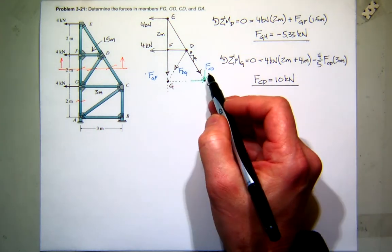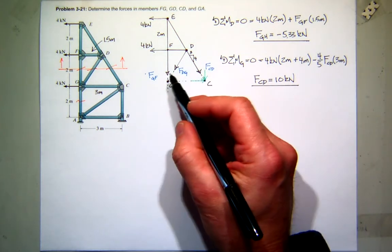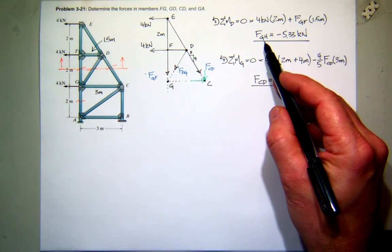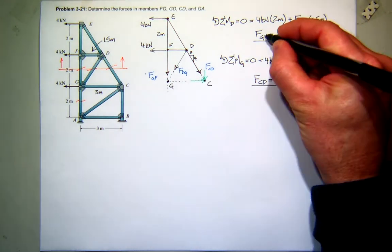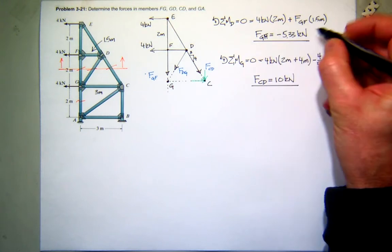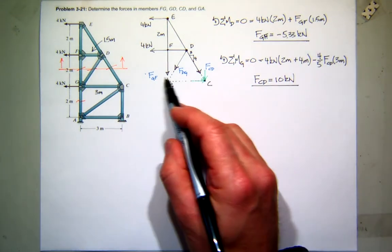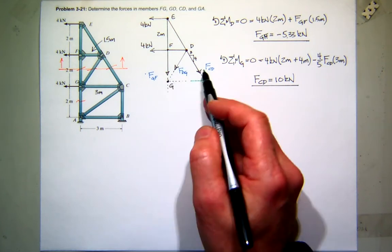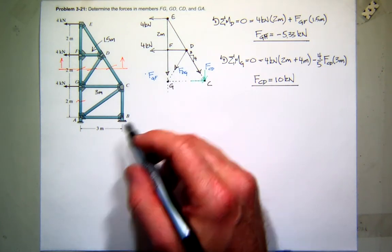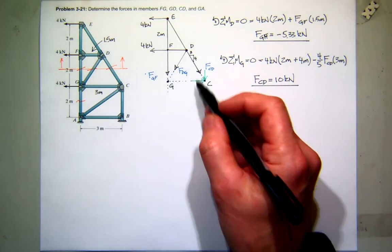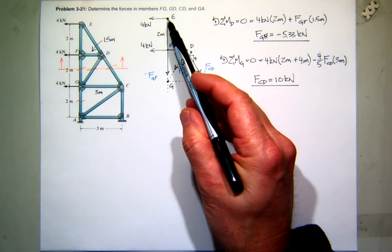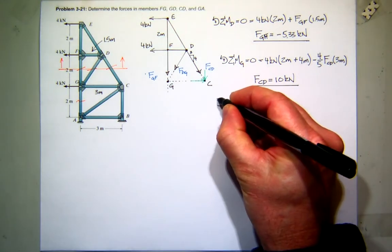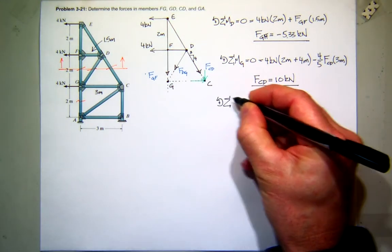Now since I have CD and I have GF, I have this one and I have this one, I could just sum forces X or sum forces Y, but then I'd have to include my previous answers, so I'm not going to do that. I want to find another point. We talked about this previously too. I'm going to sum moments at E.